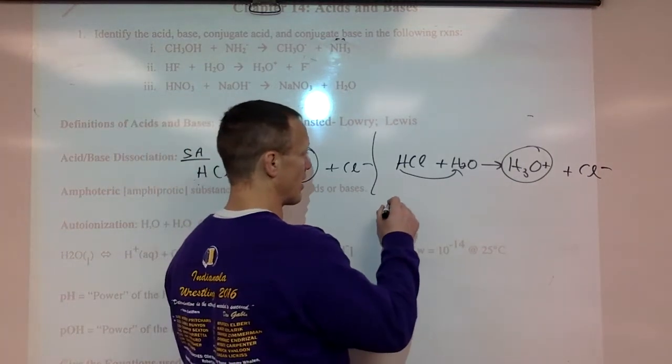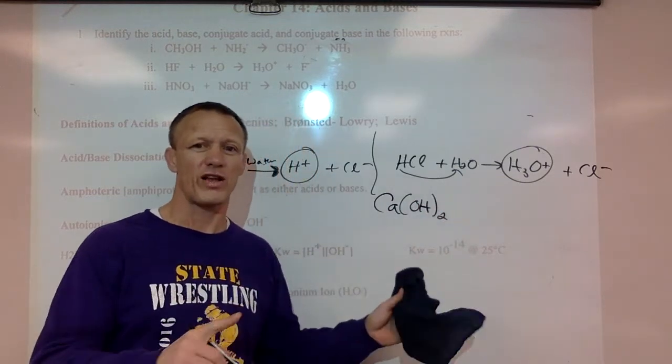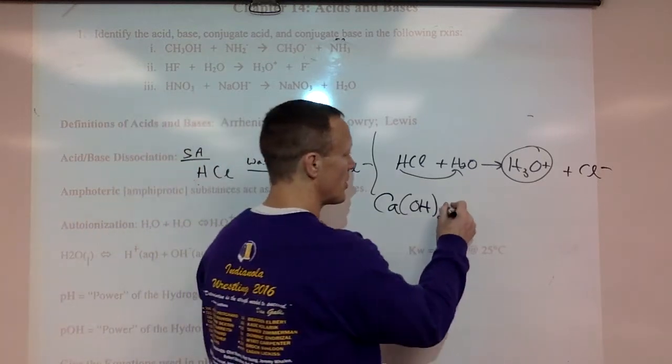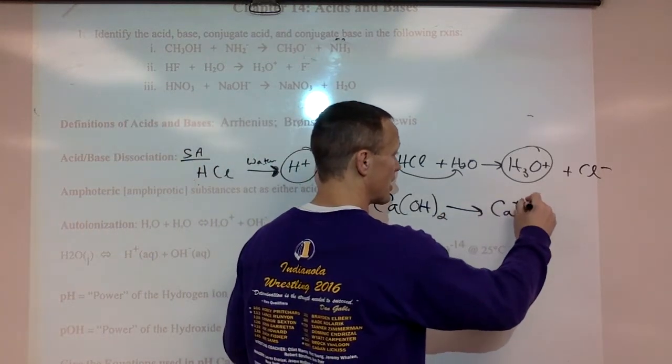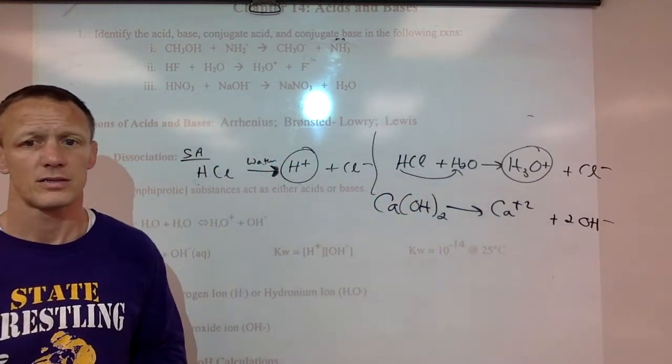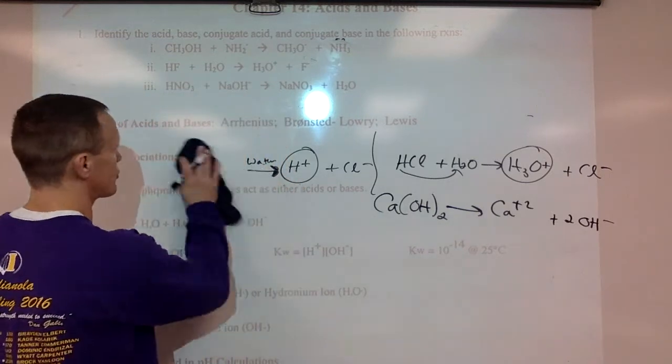Obviously a strong base like calcium hydroxide. So if it's a strong base, so family one and family two. If you have a family one or family two metal with hydroxide for right now, that's basically strong. Completely dissociate into calcium ions plus two moles of hydroxide ions. So right now we'll say family one and family two hydroxides are strong. So those are strong.